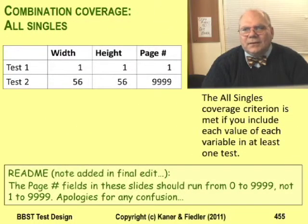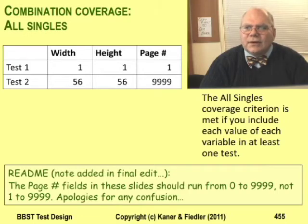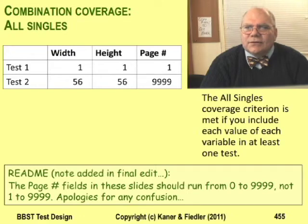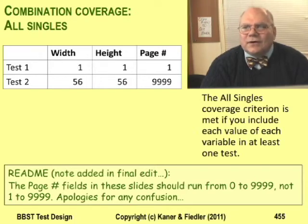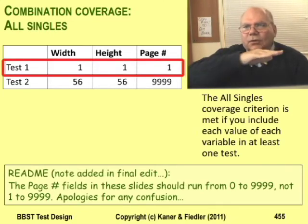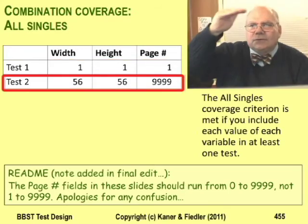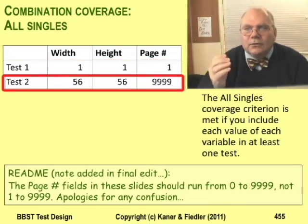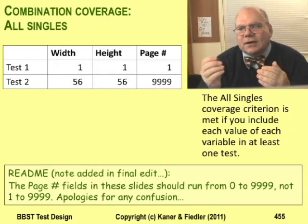Eight tests isn't very many, but I'm using a simple example to make it easy to understand three different but related coverage criteria. The coverage criterion shown here is called all singles. You achieve all singles test coverage when your tests cover every value of every variable. In the page setup dialog, you're testing two values for each variable — the upper and lower bound. You can achieve all singles with only two tests: the first test includes the lower bound for both variables, the second includes the upper bound. All lower bounds are covered, all upper bounds are covered — that's all singles.